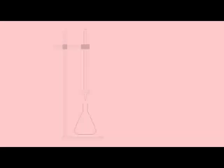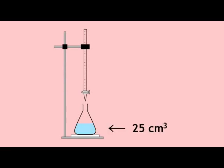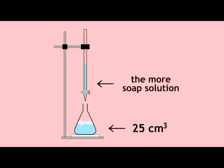To compare the hardness of different water samples, you can take a fixed volume — say 25 cm³ of the hard water — and run soap solution in from a burette bit by bit, shaking each time until the soap lathers. The more soap solution you have to use, the harder the water.